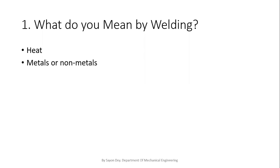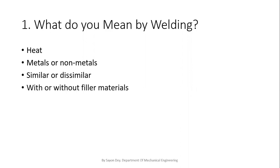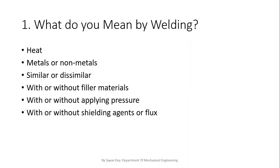Next point: metals or non-metals — we can weld metals as well as non-metals. Next: similar or dissimilar metals or non-metals. Also: with or without applying the filler metals, with or without applying the pressure, with or without shielding gas or flux, and lastly, the coalescence of two materials adjoined.